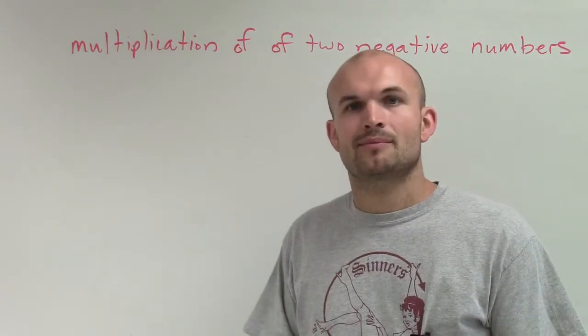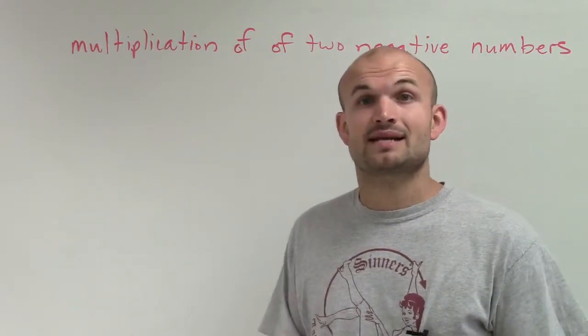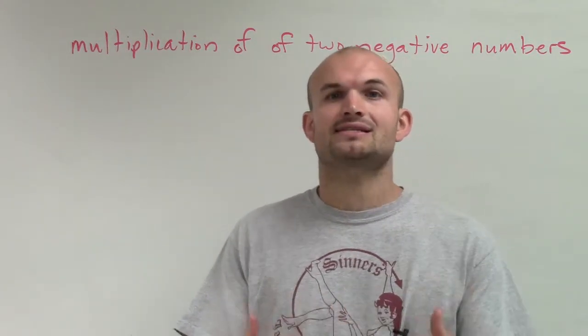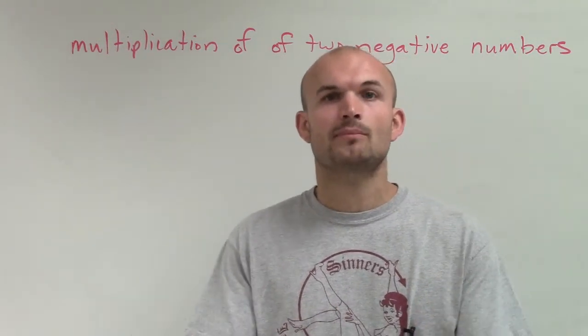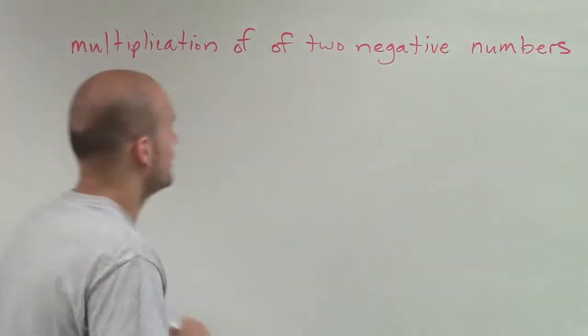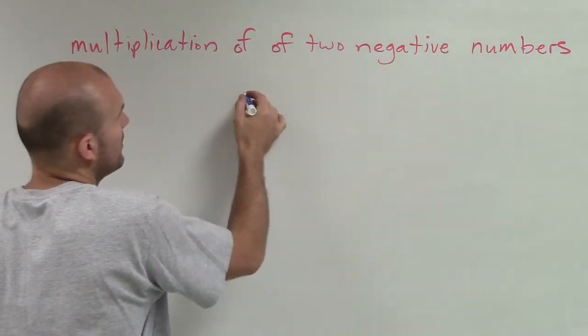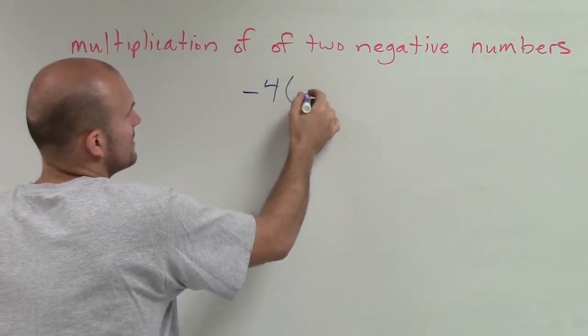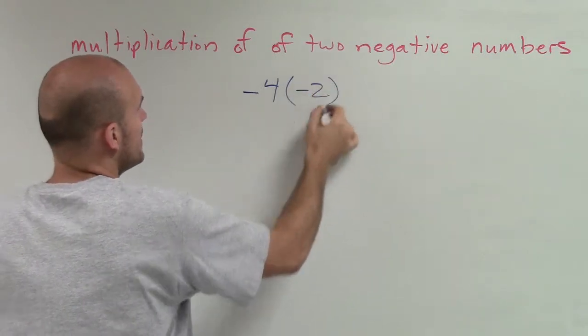When you deal with a negative number, positive times a negative or negative times a positive, we just work with repeated sets of that negative number again. So it's always kind of equal in value. But what happens when I say, what about negative sets of a negative number?